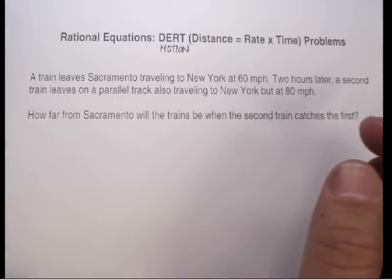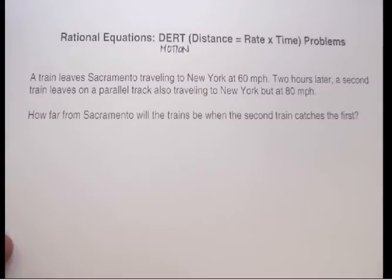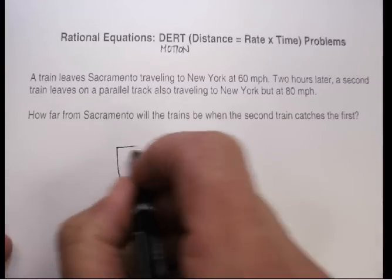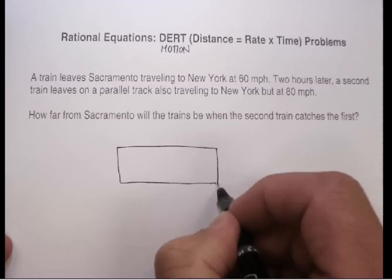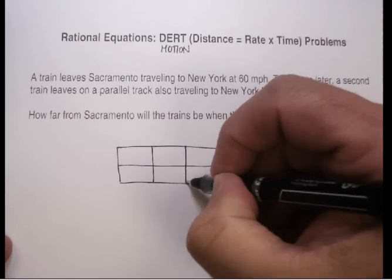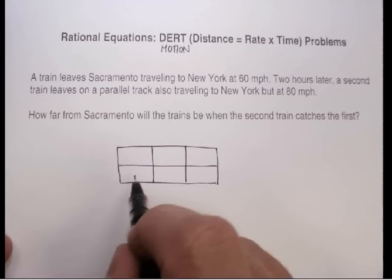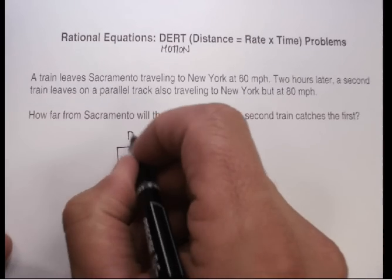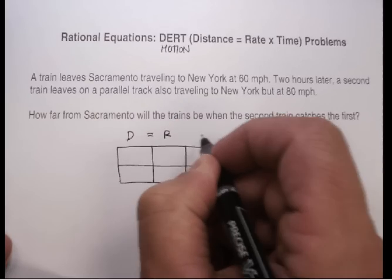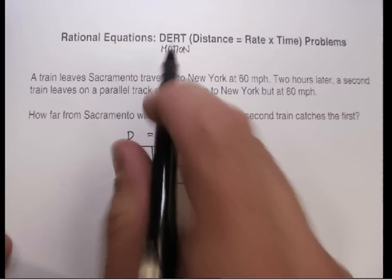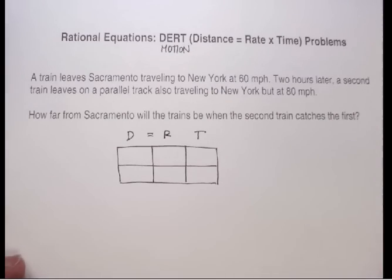So how could we solve that using rational equations? I always set up these kinds of problems in what I call my dirt box — kind of a little play on words. Basically it's just a box with six different sections, and up here you put D equals R times T. That's where you get D-I-R-T, and that's why I call it the dirt or motion problems. All these problems fit this form.